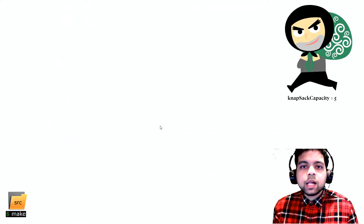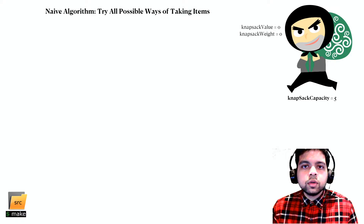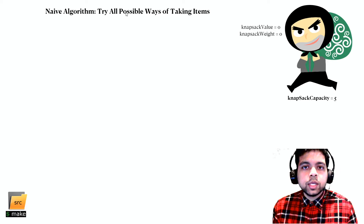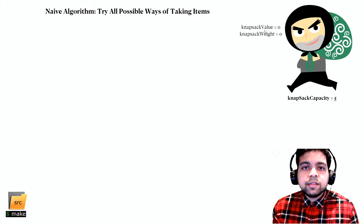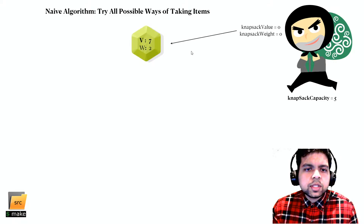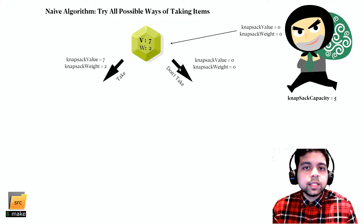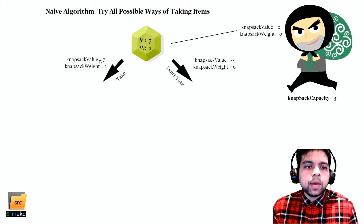Looking at the naive algorithm, we try all possible ways of taking items. Initially the thief's knapsack has zero value and zero weight. He enters the museum and sees the first gem — he has two choices: take it or don't. If he takes it, his knapsack adds that gem's value and weight, giving a value of 7 and weight of 2.